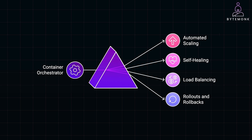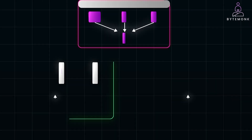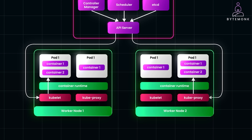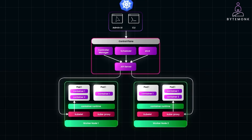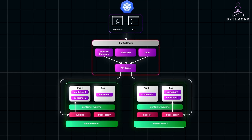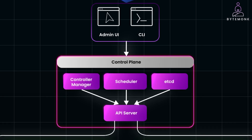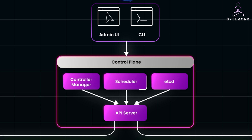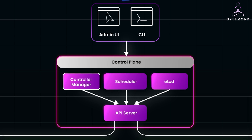Kubernetes manages your containers across a group of machines, or a cluster, using several core components. At the heart of Kubernetes are pods. A pod is the smallest unit in Kubernetes, typically running one or more containers. Pods group containers that need to work together closely and share resources like storage and networking. To manage these pods, Kubernetes uses a central control plane that oversees everything. The control plane consists of a few key parts: an API server, which is the front-end of Kubernetes that takes your commands and tells the cluster what to do; a scheduler, which determines which node should run a new pod based on resource availability; and a controller manager, which ensures that the desired state you define — like the number of running pods — is constantly maintained.